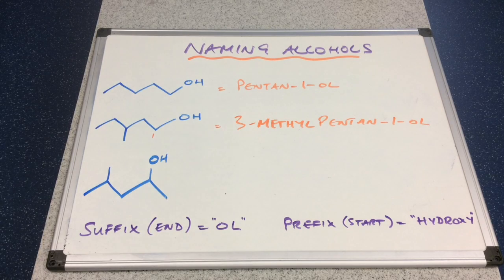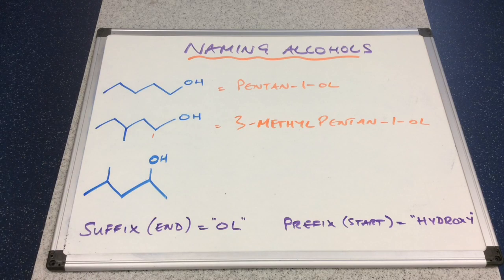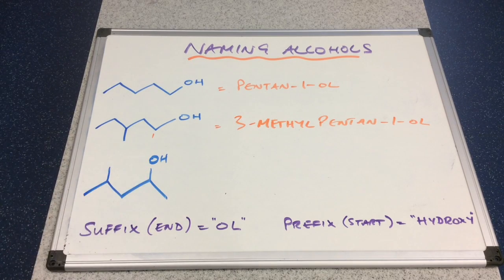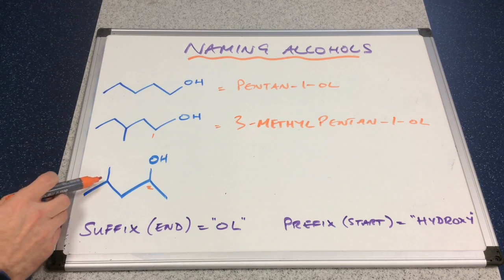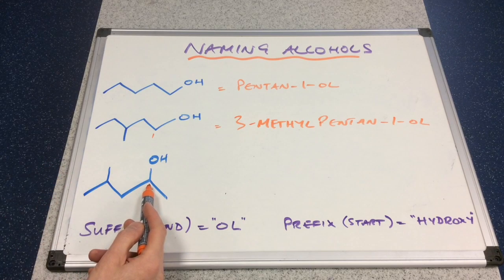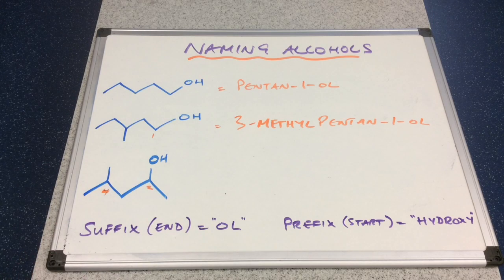The last one of these: we've got one, two, three, four, five carbons, so it's pent- again, but this time the OH group is on the second carbon. We've also got a methyl branch — counting along: carbon two, three, four — that must be carbon number four. So this will be called 4-methylpentan-2-ol.